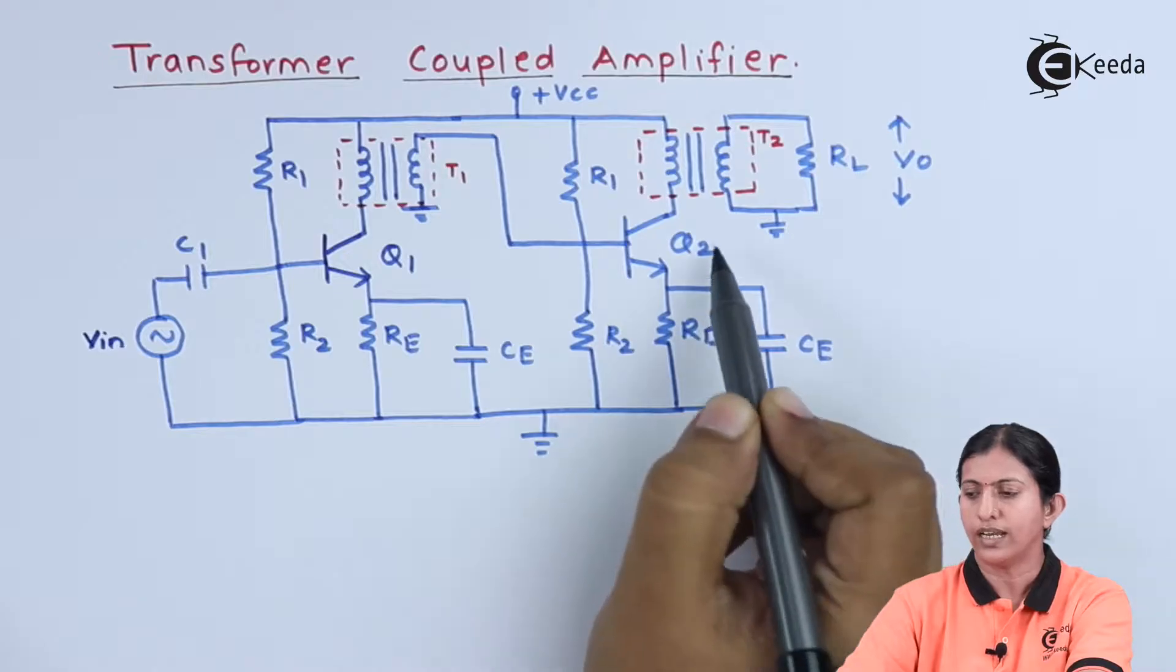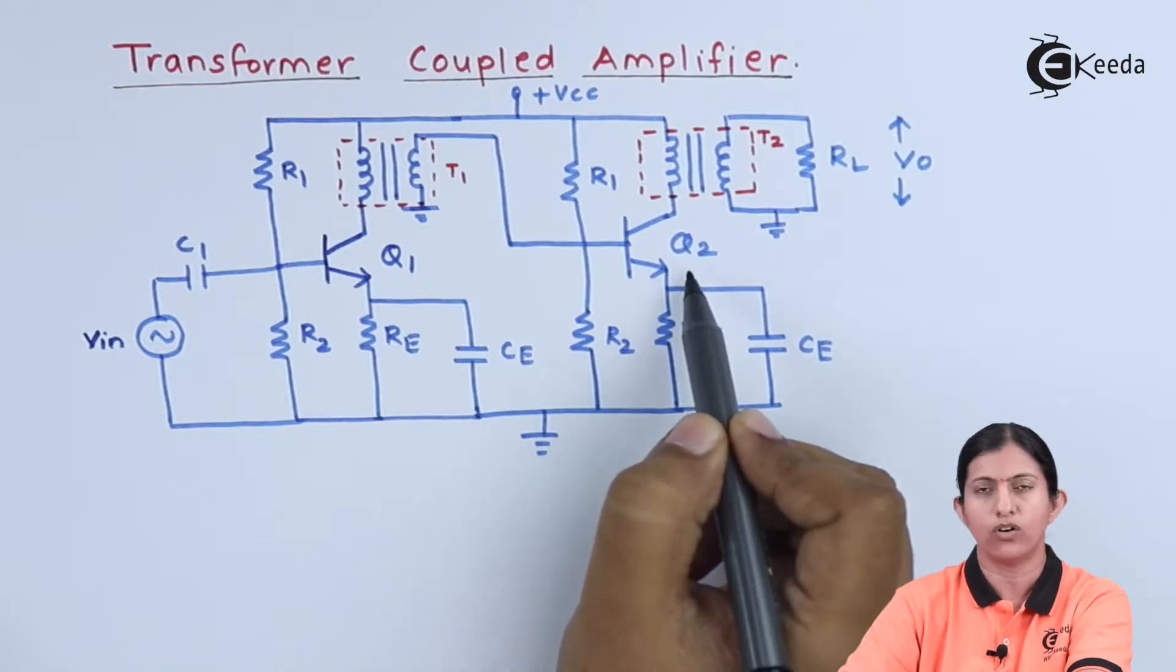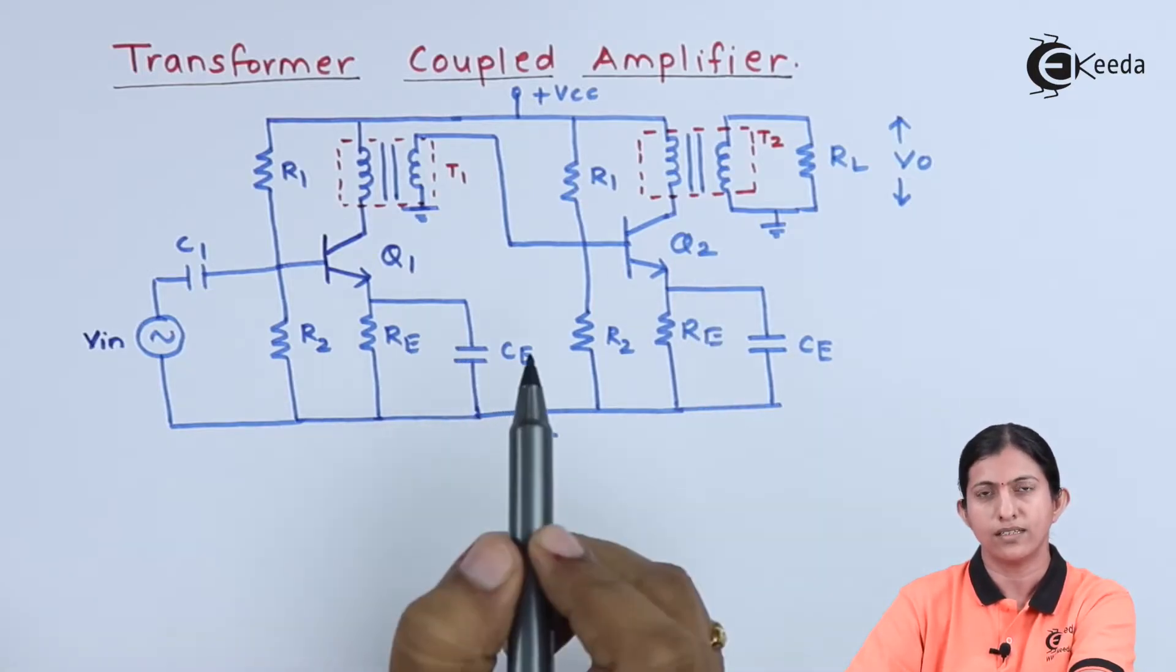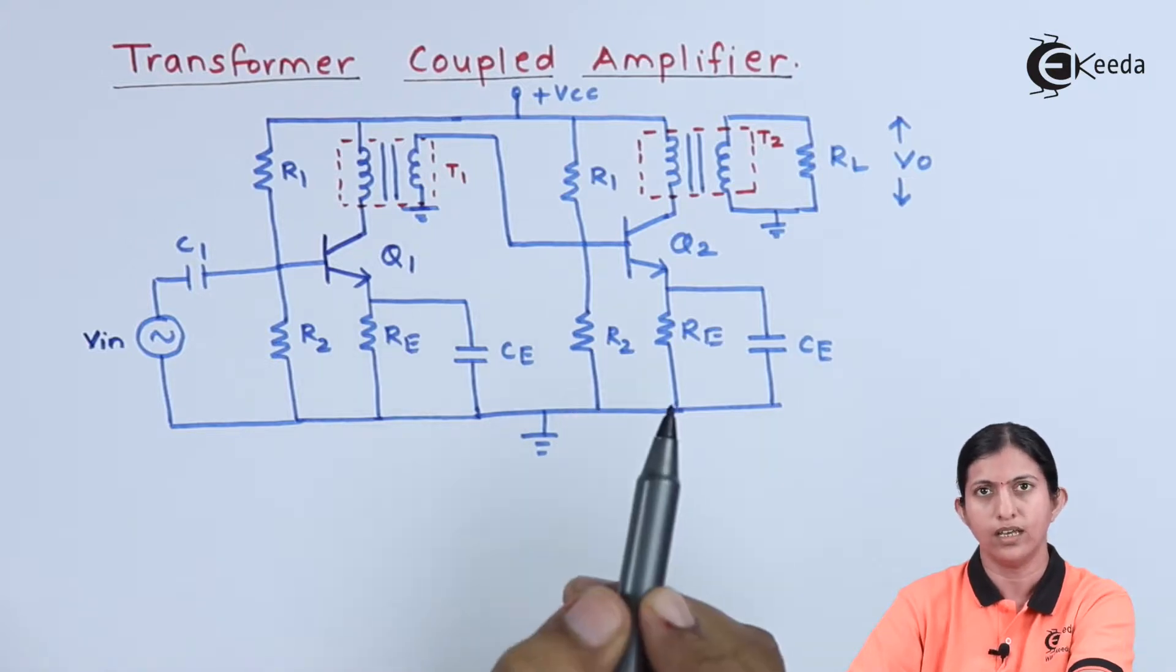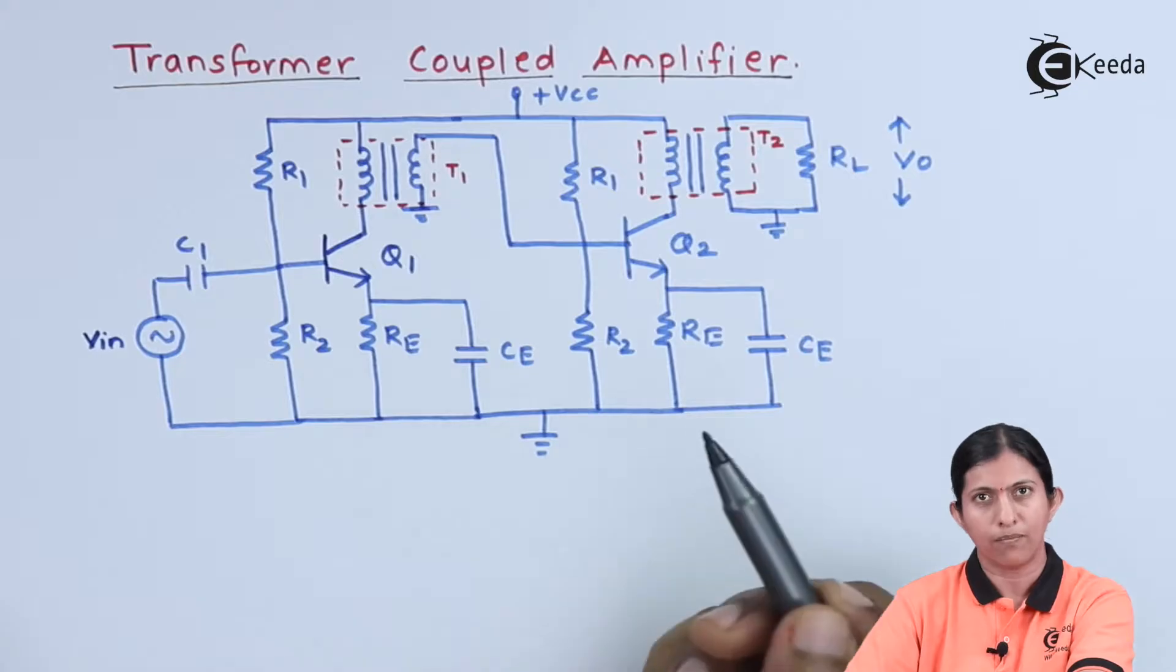R1, R2, and RE connected to Q2 form the voltage divider biasing circuit for transistor Q2. Voltage divider biasing is necessary to keep the Q point exactly at the center of the load line so that these transistors will act as amplifiers.